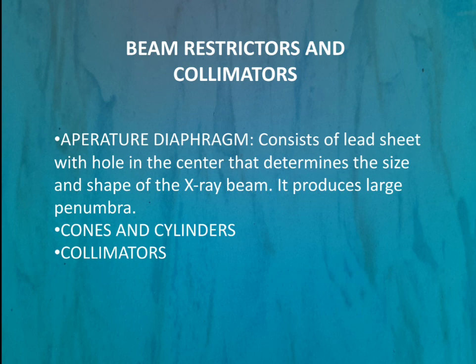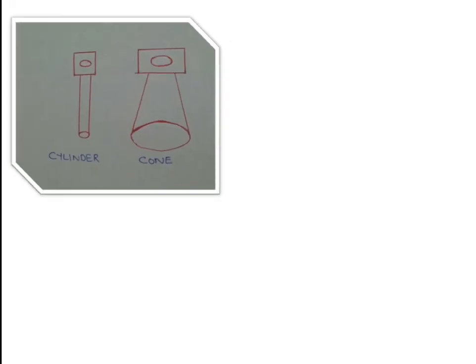Cones and cylinders are used for dental radiography and skull radiography. Collimators can be used for radiography of any part of the body. As seen in the image, cylinders and cones are attached to the window of the x-ray tube through which x-rays emerge. The cylinder or cone determines the area of exposure based on the area of the opening — only through this small opening will the x-ray come out.